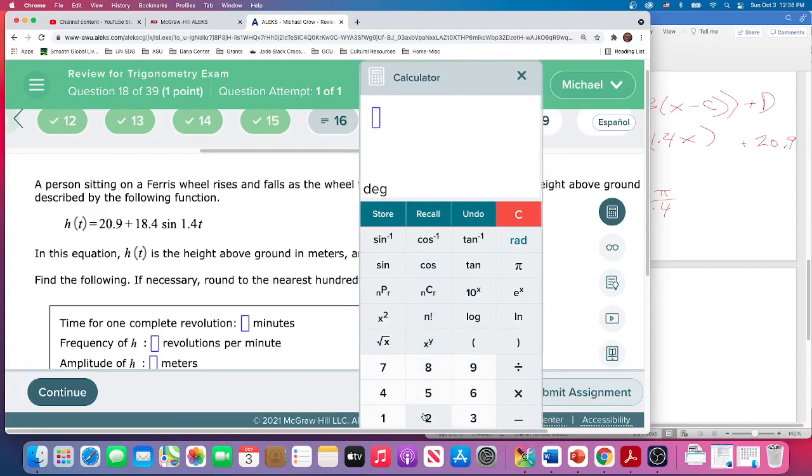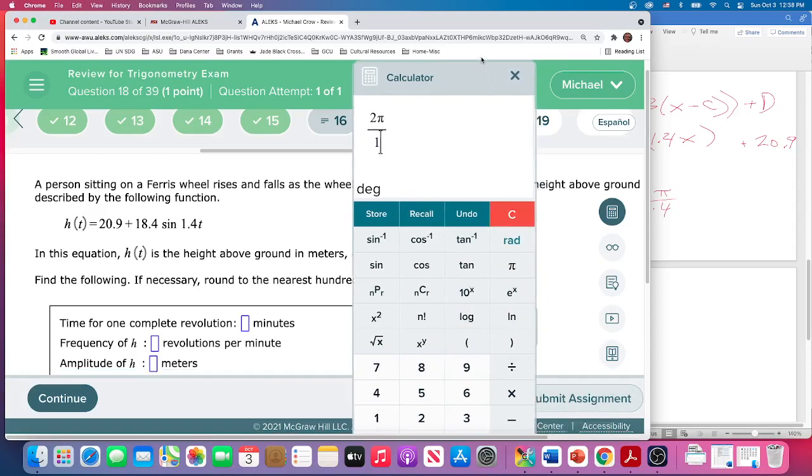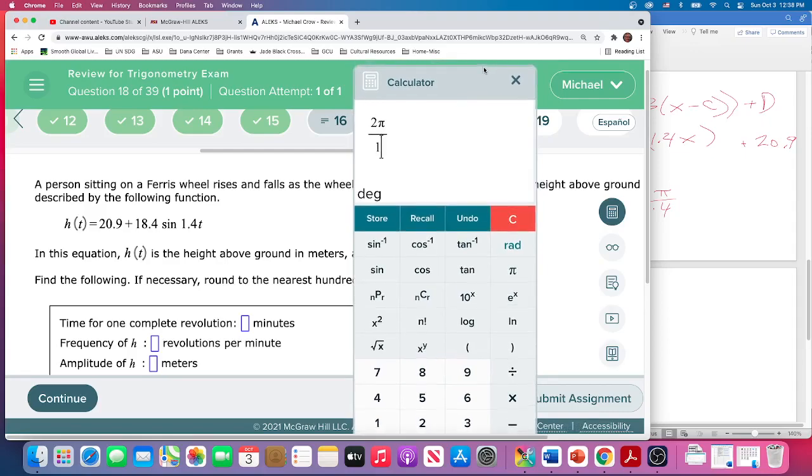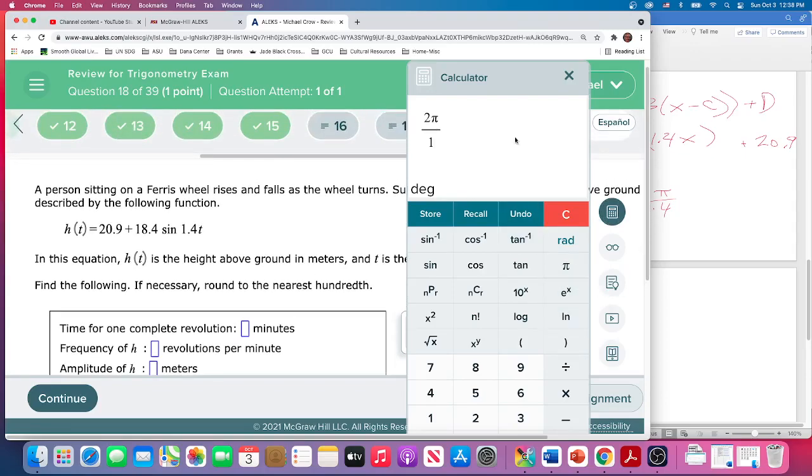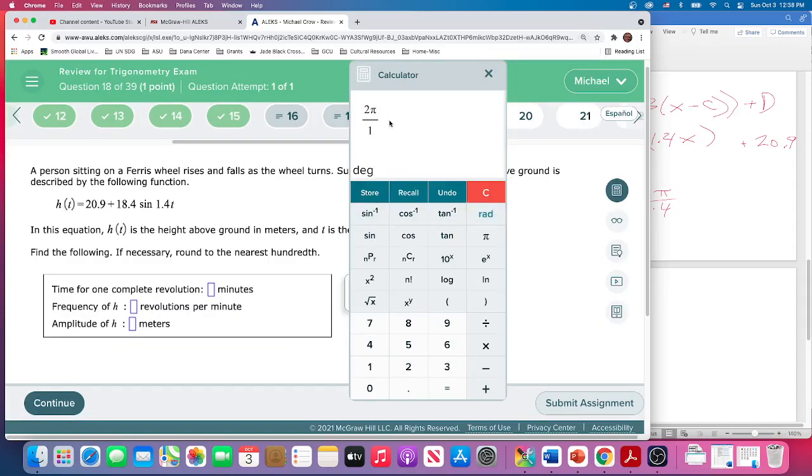So we can find that using our calculator. Let's see. 2 pi, select it, divided by 1.4. It won't go any higher. I guess I have to go up. That goes up. That's straight. Let me bring my window down a little bit. Over 1.4. Couldn't get to the decimal. Okay. Equals, nearest hundredth.